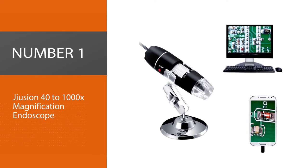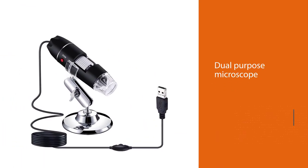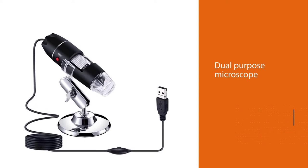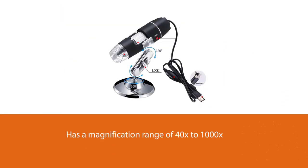Number one, most popular: Jiujan 40 to 1000x magnification endoscope. This Jiujan dual-purpose microscope and endoscope has a magnification range of 40x to 1000x, impressive considering that it's a tiny portable package.